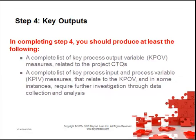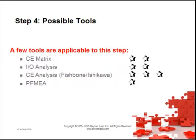So key outputs. In completing Step 4 you should produce at least the following: a complete list of key process output variables, or KPOVs, related to the project CTQs or critical to qualities; a complete list of key process input and process variables that relate to the KPOV and in some instances require further investigation through data collection and analysis. Some possible tools for this would be cause and effect matrix, input-output analysis, cause and effect analysis, fishbone and Ishikawa, or process FMEA, or failure modes and effects analysis.